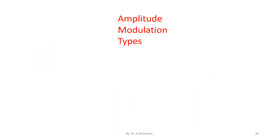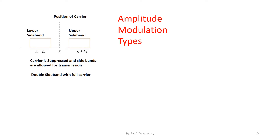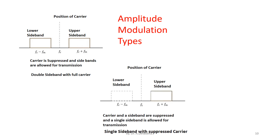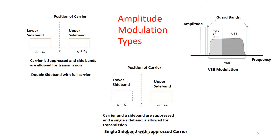Amplitude modulation types are shown here. In double sideband with full carrier, the carrier is suppressed and the sidebands are allowed for transmission. In single sideband with suppressed carrier, the carrier and one sideband are suppressed and only the single sideband is allowed for transmission. In VESB modulation, guard bands are included.